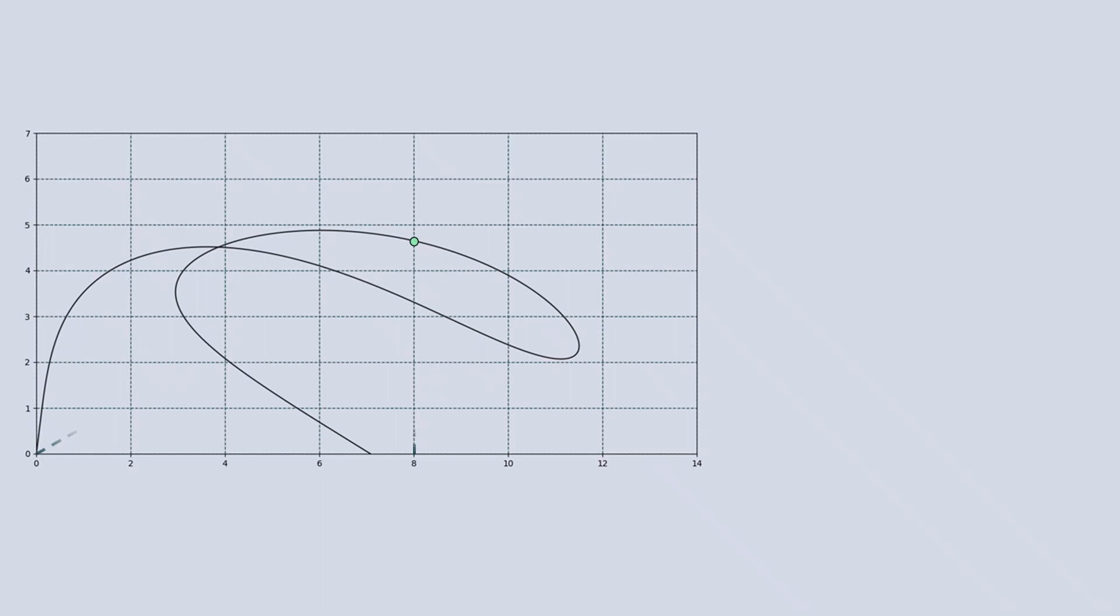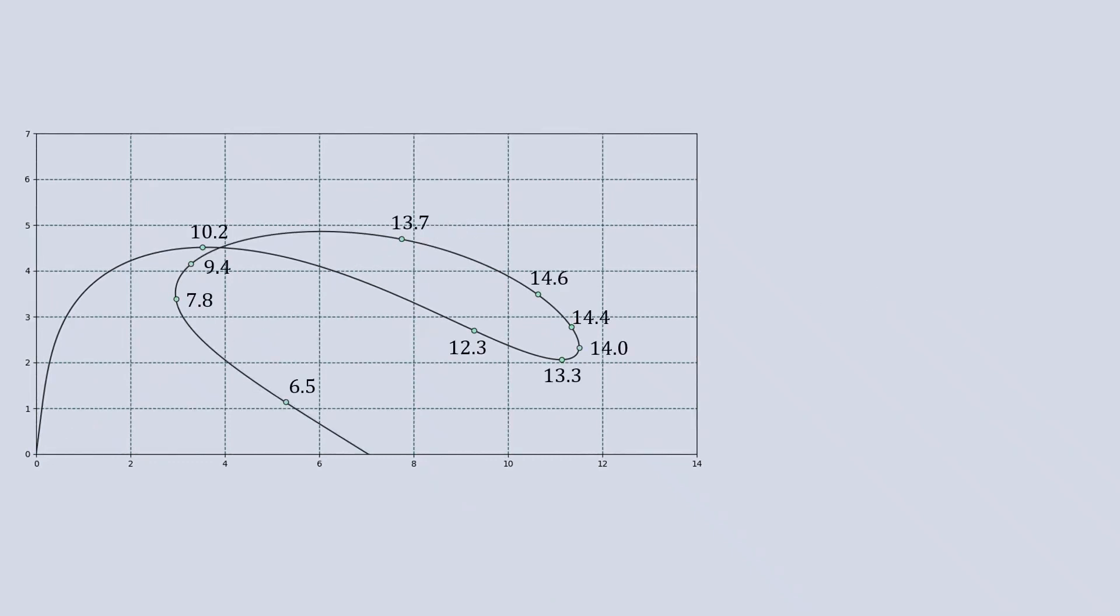This sum can be written algebraically as s equals square root of x squared plus y squared plus y, and thus it can be calculated for every point on the shape. These sums are shown on the figure and we can see that the maximal one is 14.6. So we found it, we found the point touching the envelope.